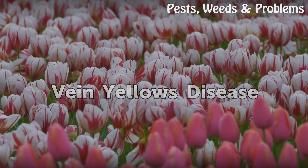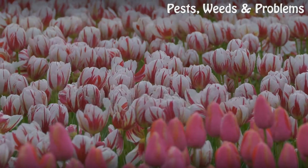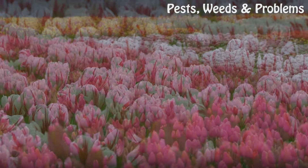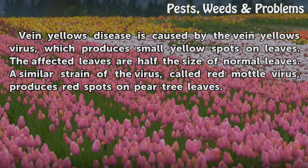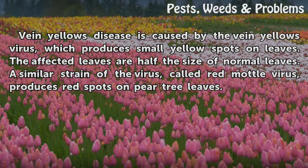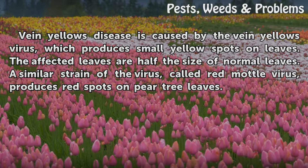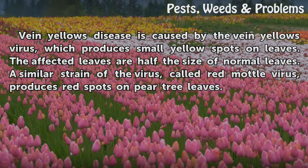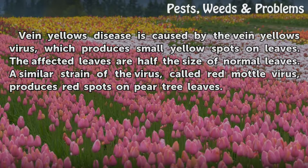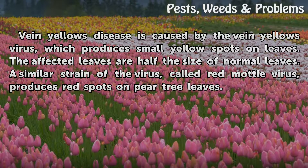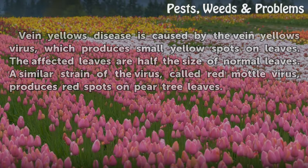Vein Yellows Disease. Vein yellows disease is caused by the vein yellows virus, which produces small yellow spots on leaves. The affected leaves are half the size of normal leaves. A similar strain of the virus, called red mottle virus, produces red spots on pear tree leaves.